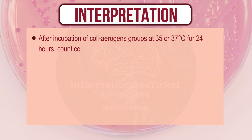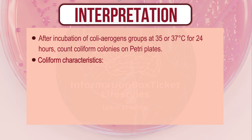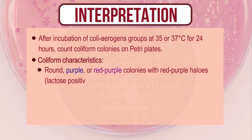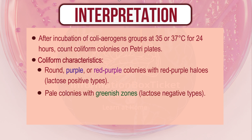Interpretation: After incubation of coli-aerogenes groups at 35 or 37°C for 24 hours, count coliform colonies on petri plates. Coliform characteristics: round, purple, or red-purple colonies with red-purple halos indicate lactose-positive types. Pale colonies with greenish zones indicate lactose-negative types. Colonies have a diameter ≥ 0.5 mm.